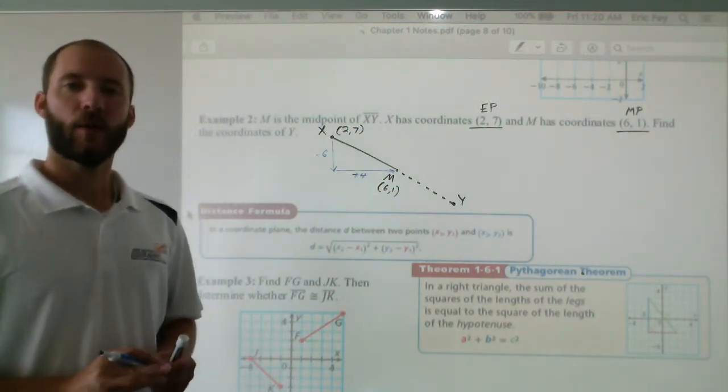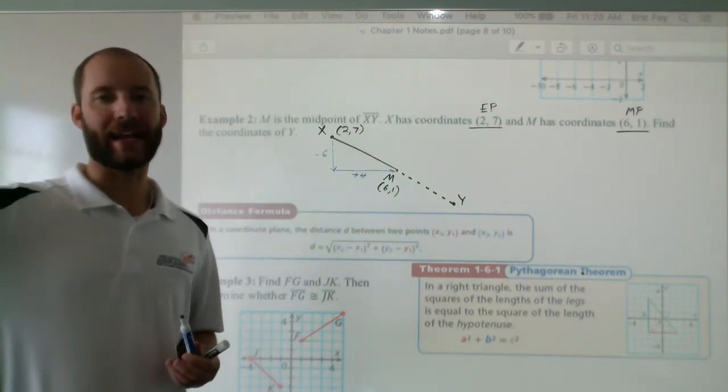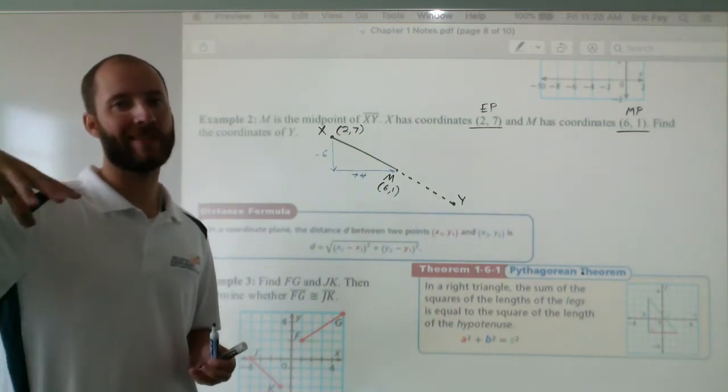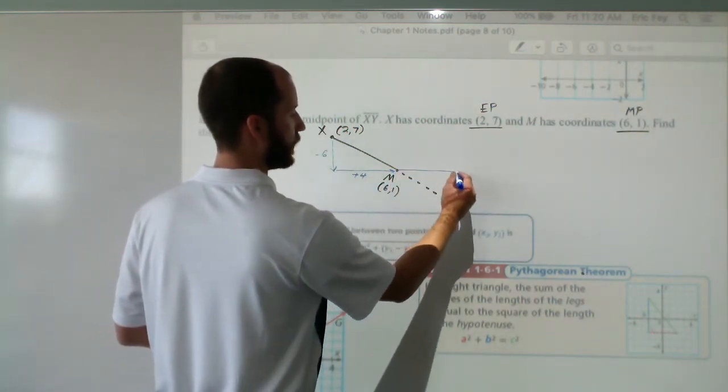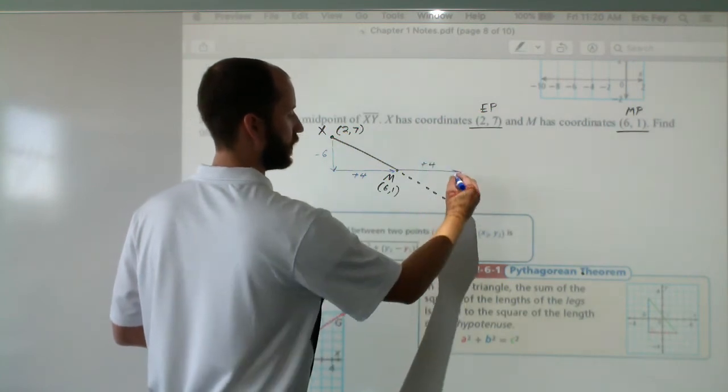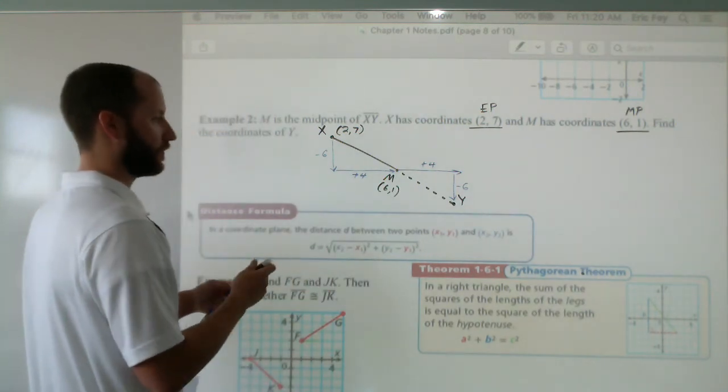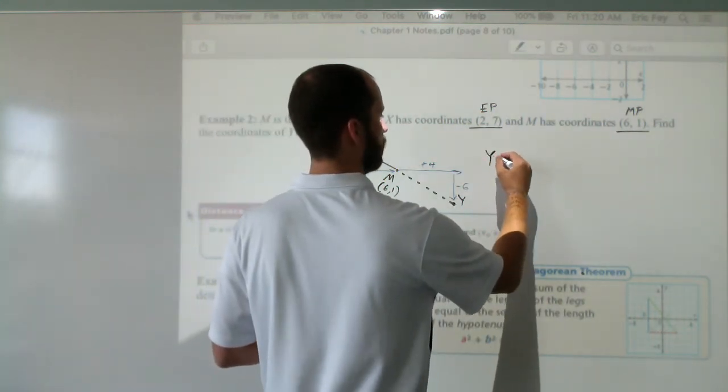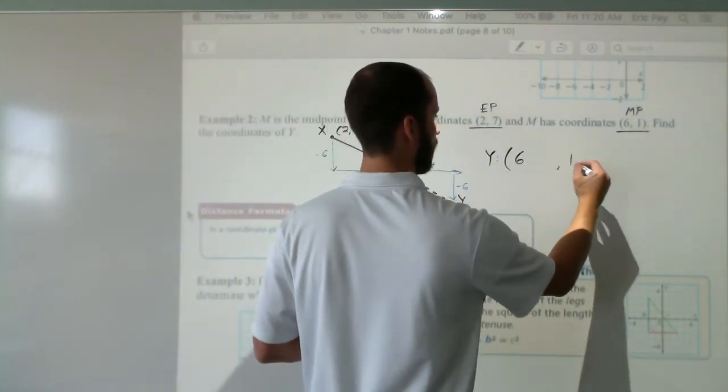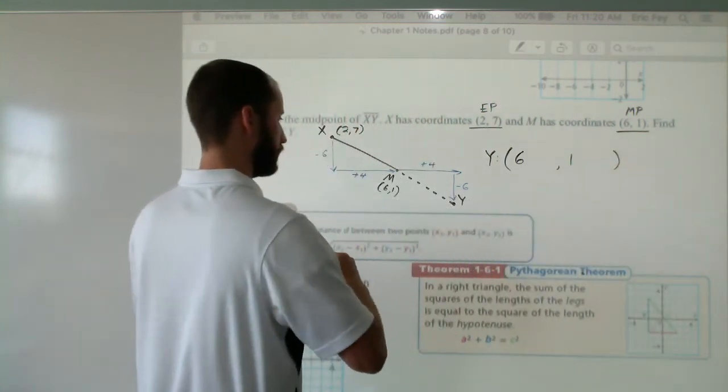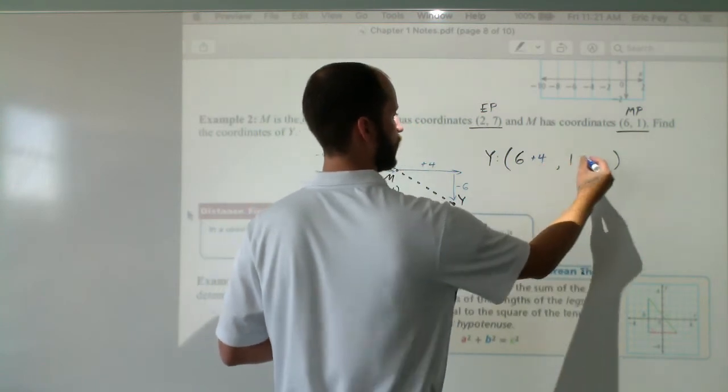Now m is the midpoint, the halfway point. When you are halfway done with something, you have to take everything, all the time that you've spent, and do that again. So we need to go over to the right another 4 units. And we need to go down another 6. So starting at our midpoint, midpoint was 6 and 1. We have to go 4 units to the right. We have to go 6 units down.